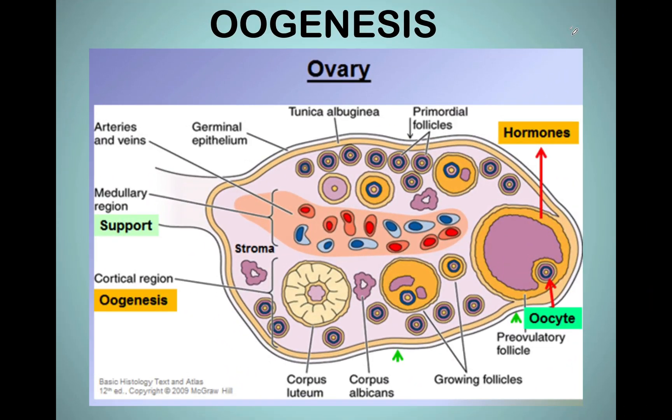Now let's take a trip into the female's ovaries. Inside the female's ovaries is where gametogenesis is going to take place, and when gametogenesis takes place in the ovaries of the female, we call the process oogenesis. Oogenesis is when gametes are going to be produced inside the ovaries of the female — when the ovaries produce the ova, or the egg cells. Please look out for the oogenesis video to follow.